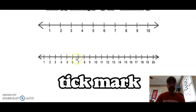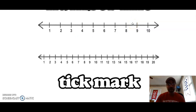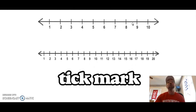Can you say that word? Tick mark! A tick mark is where each number belongs on the number line. You can see here we have a tick mark for the number one, a tick mark for the number two, a tick mark for the number three, a tick mark for the number four. That's how number lines work — they have a tick mark and then they have a number that names each tick mark. This year in first grade math we will be working with number lines a lot.